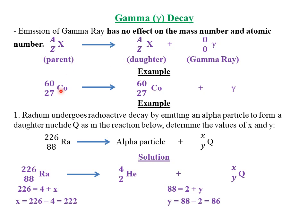For example, cobalt with a mass number of 60 and atomic number 27 decays by emitting a gamma ray. We do not expect any changes on its mass number or atomic number. The parent nuclide cobalt had mass number 60 and atomic number 27, and the daughter nuclide also has mass number 60 and atomic number 27. Then of course we add the gamma ray which has been released as a result of cobalt decaying.